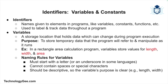Let's begin with identifiers. An identifier is essentially the name we give to different elements in our programs. Identifiers can represent variables, constants, functions, and other programming entities, and they help us track and manipulate data within a program.